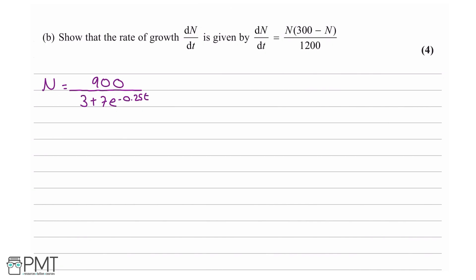Part B says: show that the rate of growth dn by dt is given by dn by dt equals n times (300 minus n) all over 1,200, for 4 marks.